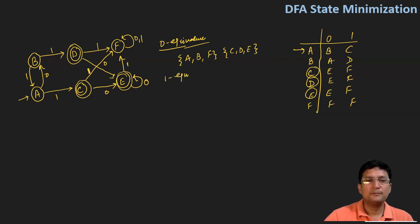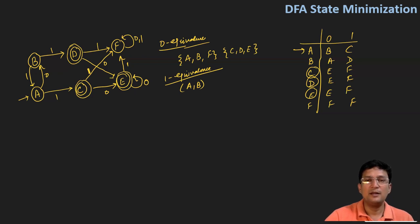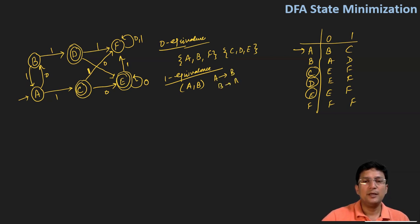Let's start with the one equivalence. For one equivalence, I'll first take the pair A and B — we take pairs within the same set. A on zero goes to B, and B on zero goes to A; A and B belong to the same set. A on one goes to C and B on one goes to D, and C and D are in the same set. Hence, A and B are one equivalent.